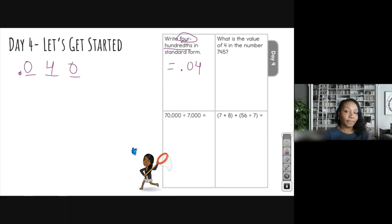Okay, the next one says what is the value of four in the number seven hundred and forty-five. So again, we're going to write it out. We need to know our place value, right? There's no decimal in this number that I see, and so when the number does not have a decimal, where do you put it? At the end, always at the end, right?